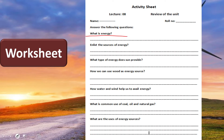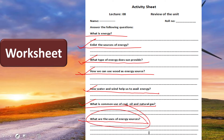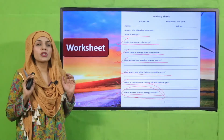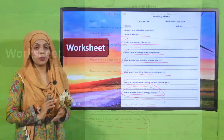The worksheet questions are: What is energy? Define energy. Enlist the sources of energy. What type of energy does the sun provide? How can we use wood as energy? How do water and wind help us to avail energy? What is the common use of coal, oil, and natural gas? What are the uses of different energy sources? Read the questions carefully, answer them, pause the video, and complete the worksheet.